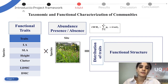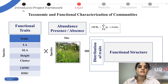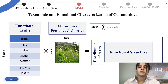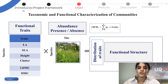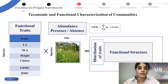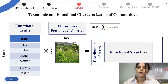Six functional traits were selected: leaf area, specific leaf area, height, clover coverage, leaf dry matter content, and dry matter content of the plant. These traits were measured at the individual level and also weighted at the community level, which brings us to talk about the community weighted mean. According to the mass ratio hypothesis, the species with the highest biomass contribute more to the functioning of the community. This is called the aggregate traits, calculated for each quadrat based on the coverage rate values and the trait values measured for each species.